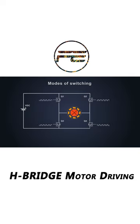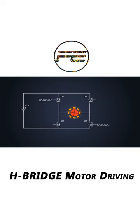The MOSFETs in an H-bridge can be switched in different sequences to provide the desired voltage polarity. There are two common modes to do so: the bipolar drive and unipolar drive.